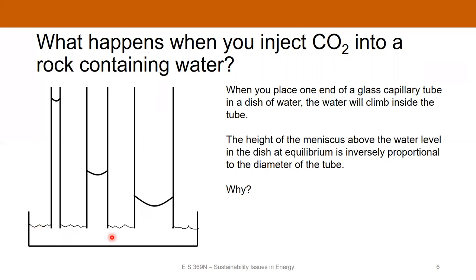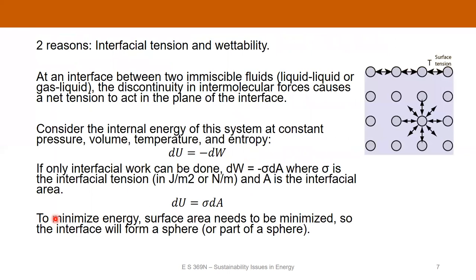So let's imagine you've got a dish full of water. Here's the surface of the water, and this is air. Right at the air-water interface, the pressure is one atmosphere. If you stick little glass tubes into the water, the water is going to climb up the tube. And it's going to climb higher in tubes with a smaller diameter. What we observe is that the height — the distance that the meniscus comes to its stable configuration above the water surface — is inversely proportional to the diameter of the tube. Why would that be? It's due to two phenomena called interfacial tension and wettability.